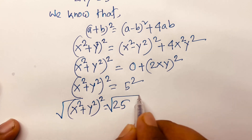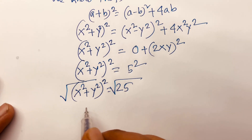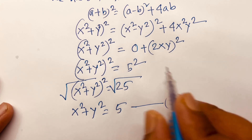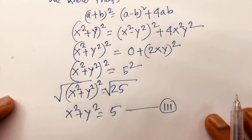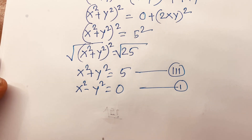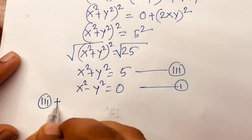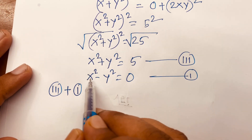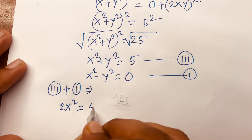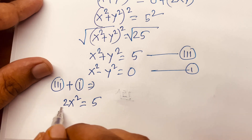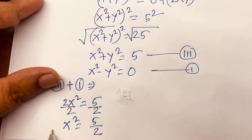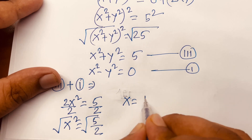Taking the square root of both sides, the square roots cancel, giving x² + y² = 5. This is our third equation. Adding equation 3 and equation 1: (x² + y²) + (x² − y²) = 5 + 0, so 2x² = 5, giving x² = 5/2, and therefore x = ±√5 / √2.